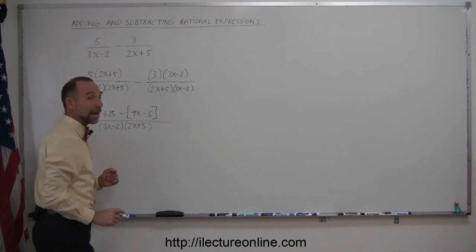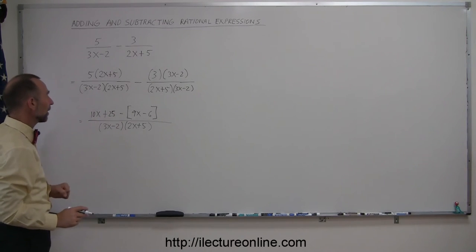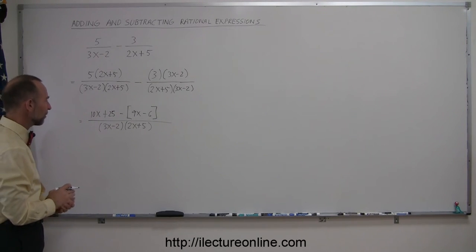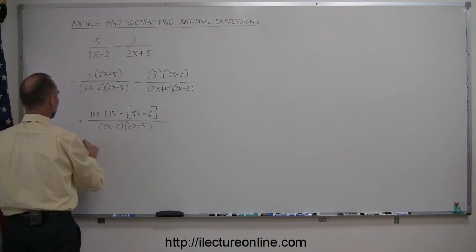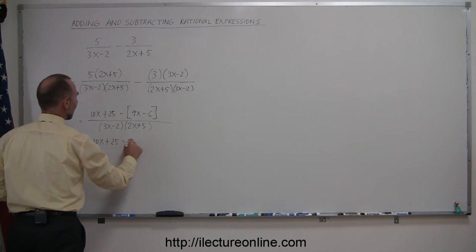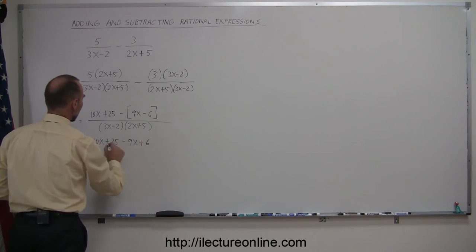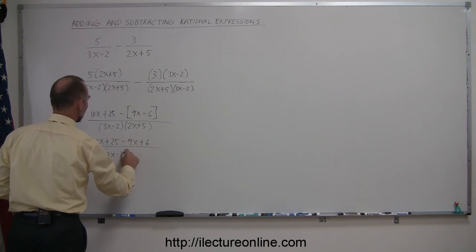The reason why I use brackets like that is I don't want to make a mistake with this negative sign. It's always good to play safe using parentheses or brackets. Now we can apply the negative sign, so this is equal to 10x plus 25 minus 9x. And of course the minus cancels out to minus, it becomes a plus 6, all divided over the common denominator of 3x minus 2 times 2x plus 5.